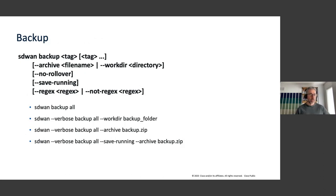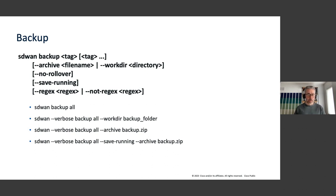As an example, to run a backup the shortest version is just 'sdwan backup all', which will create a backup of your SD-WAN and save it to a default directory on your local machine. You can add the verbose option to show informational messages on the console so you can follow the backup as it progresses. You can also provide additional options to save to a different directory, save directly to a zip archive, or include the running config from end devices in the backup.